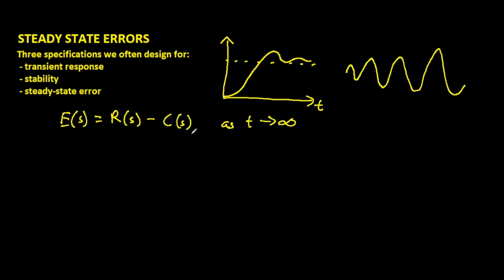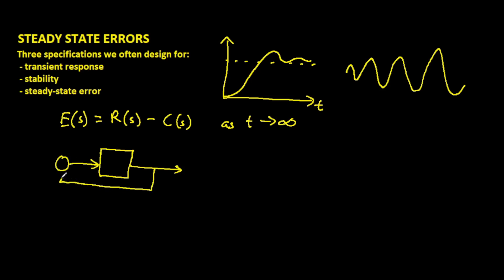Let's go ahead and take a simple example. For today, we will mostly consider the unity feedback system — specifically, the unity negative feedback system. If our R is our input and our C is our output, then we have G of S in the forward path. G of S stands for the plant — the transfer function of the plant.